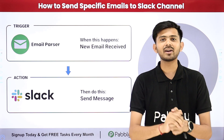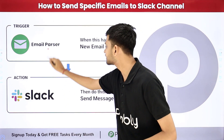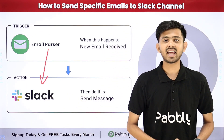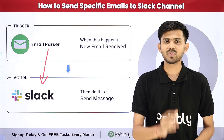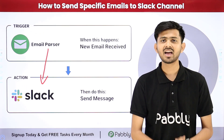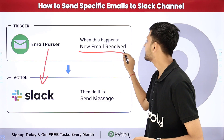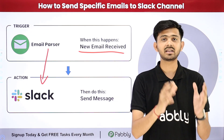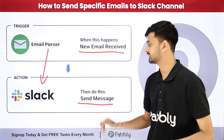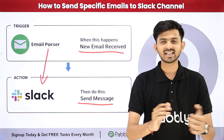To accomplish this, I need to build a connection between email parser and Slack. I'll forward all emails from Gmail to Pabbly Connect using email parser, filter them by specific keywords, and then send the matching emails to my Slack channel. I'm going to use Pabbly Connect, which is an amazing software for automation and integration.